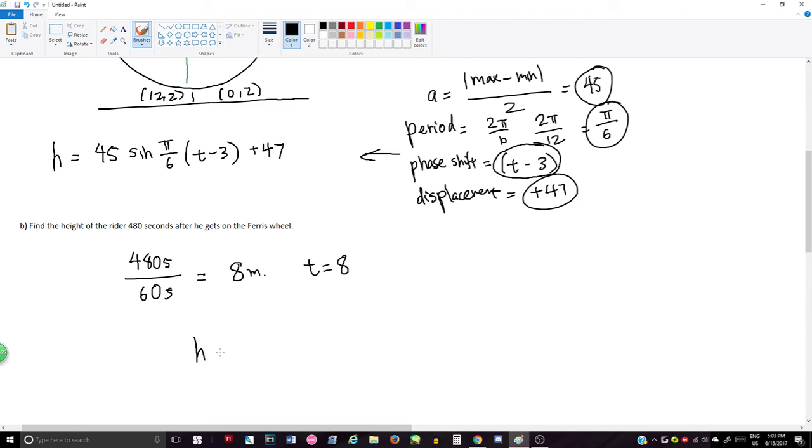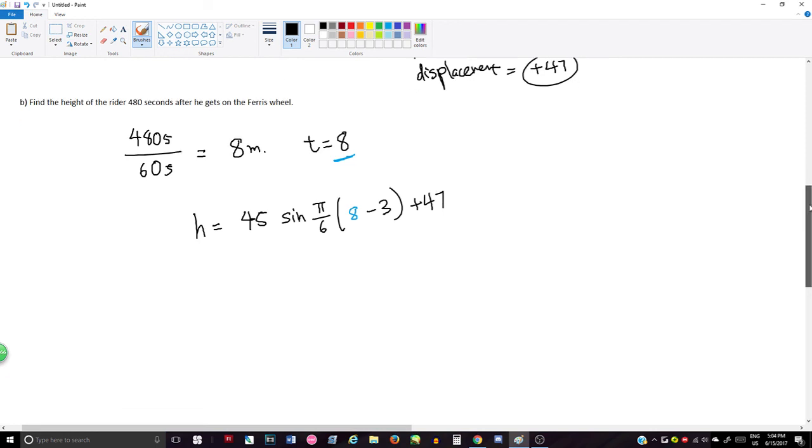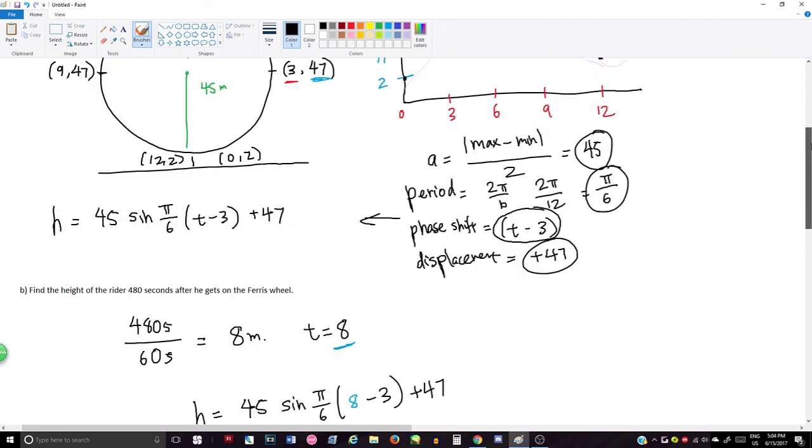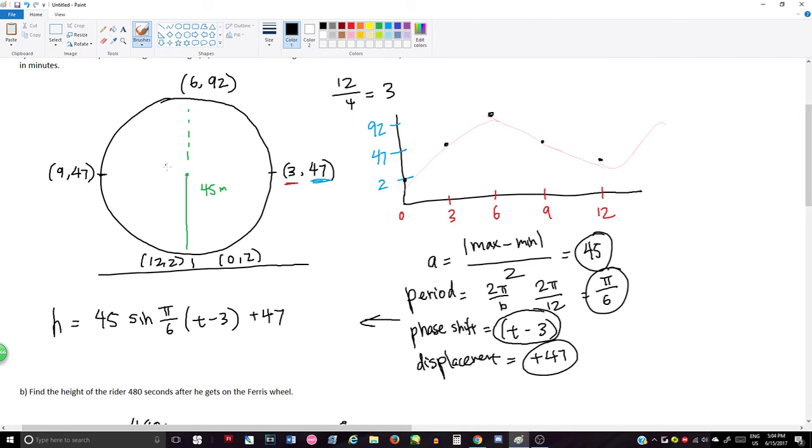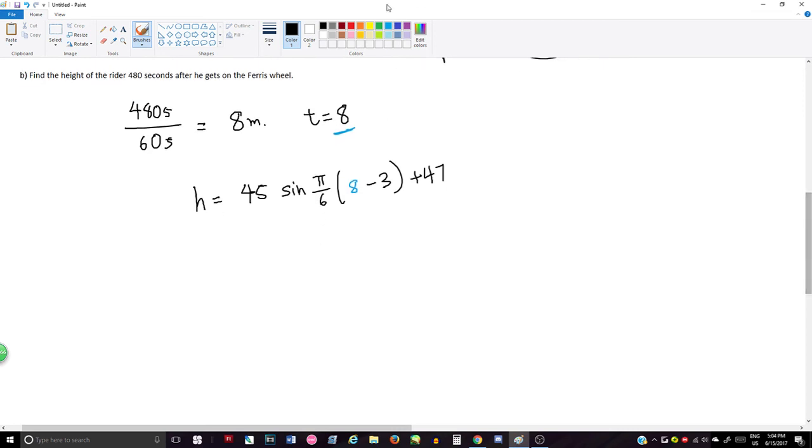We have height equals, this is what we're trying to find, the height here. Height equals 45 sine pi over 6. This is our 8, so we can put this here, 8, minus 3, plus 47. And before we input this to get our answer, we can look back on the graph and kind of make a guess to see if it is correct, because here you can see t equals 8. That would be somewhere here, so that looks to be around, maybe like, 80-ish, around there. When you're solving this, you want to put double brackets around these, because you're going to want to figure out what this number is first, and then input that into sine, and then figure out the answer.